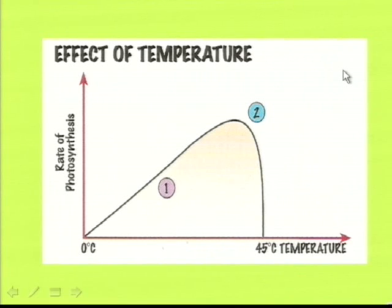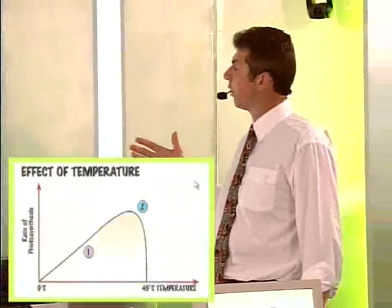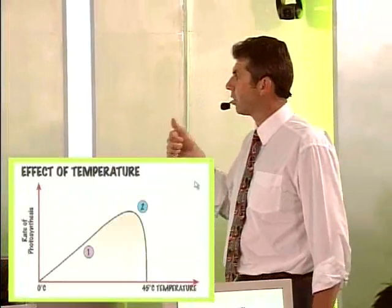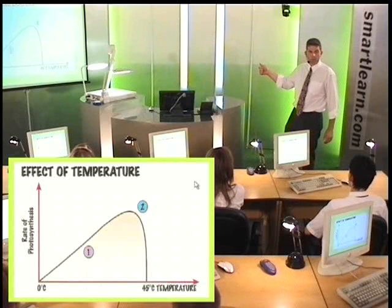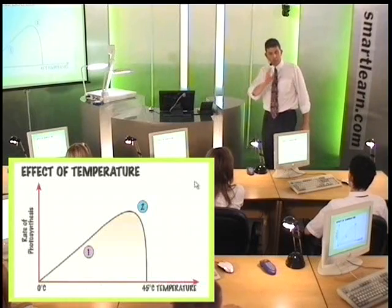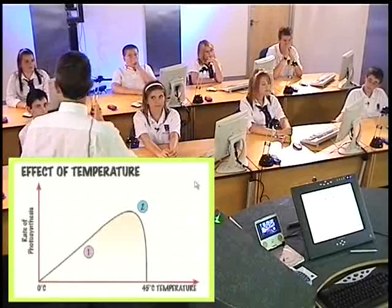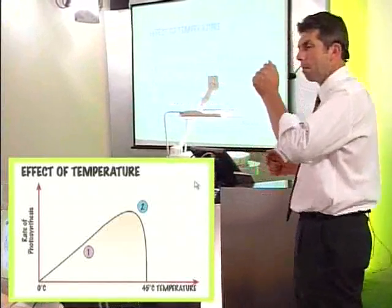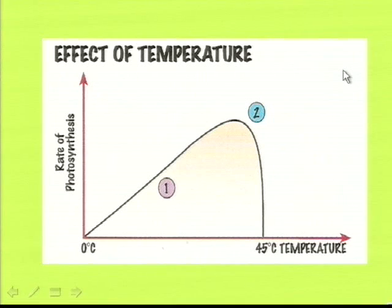Looking at this graph: temperature is on the x-axis along the bottom, increasing from left to right. We can see what happens as the temperature increases initially — the rate of photosynthesis goes up, but then it goes down. When it gets too hot, something changes. A little bit like us, we don't like extreme heat, and plants are no different. They like it warm, but too warm and it's no good. We can see on that graph that at 45 degrees, photosynthesis begins to stop very rapidly — because the plant is dying.